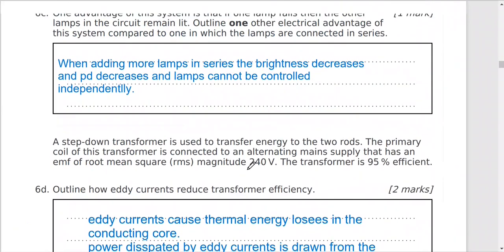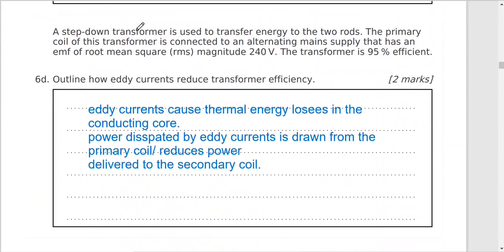Okay. A step-down transformer, step-down transformer means we reduce the voltage, is used to transfer energy to two rods. The primary coil of this transformer is connected to alternating main supply that has electromotive force root mean square RMS of magnitude 240 voltage. So this is V RMS root mean square voltage.